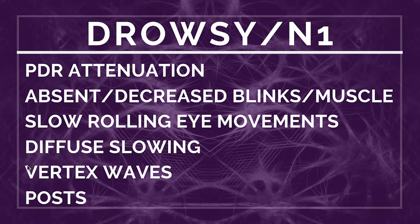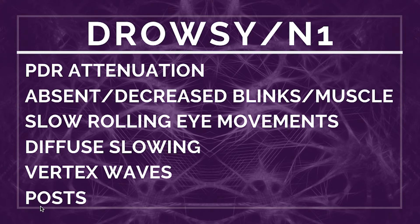The other two findings we can see in drowsiness or N1 are vertex waves and POSTS — positive occipital sharp transients of sleep. Just be careful: vertex waves can also be seen in N2, and POSTS can be seen in N2 as well, so they're not very specific or characteristic of N1. That's a little different from sleep spindles and K-complexes in stage N2, which we'll go over in detail.